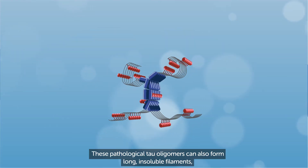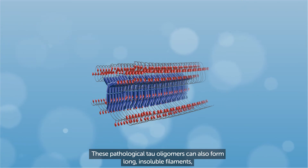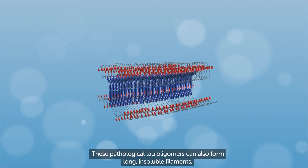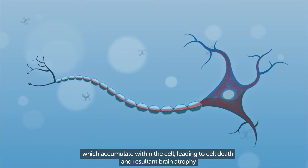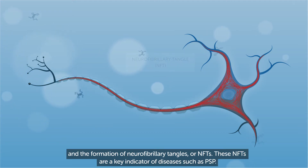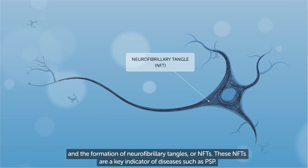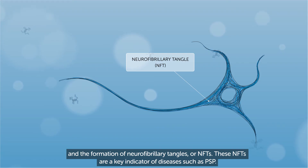These pathological tau oligomers can also form long insoluble filaments which accumulate within the cell, leading to cell death and resultant brain atrophy and the formation of neurofibrillary tangles, or NFTs. These NFTs are a key indicator of diseases such as PSP.